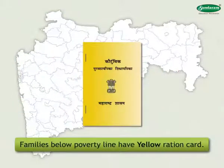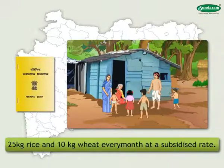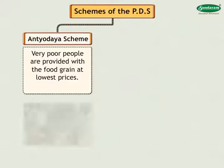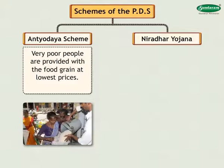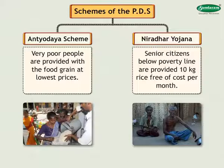Families below poverty line have a yellow ration card. They get 25 kilograms rice and 10 kilograms wheat every month at a subsidized rate. Two schemes are available under PDS. Under the Antyodaya scheme, very poor people are provided food grain at the lowest prices. Under Niradhara Yojana, senior citizens below poverty line are provided 10 kilograms rice free of cost per month.